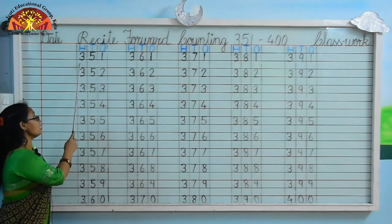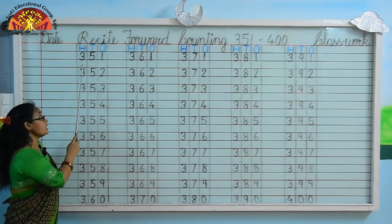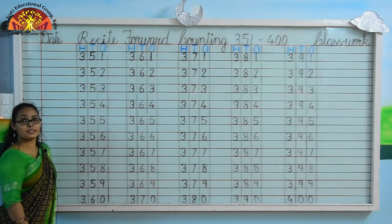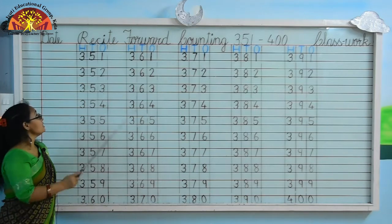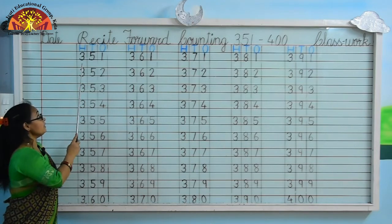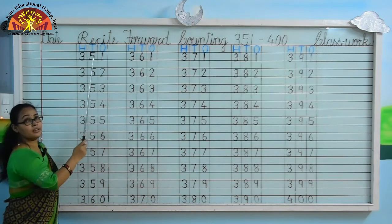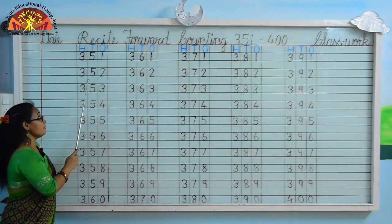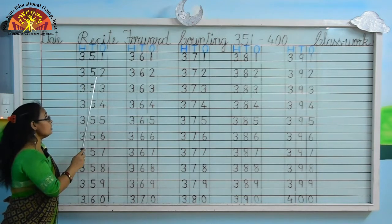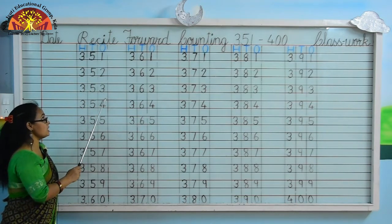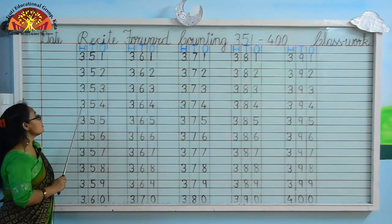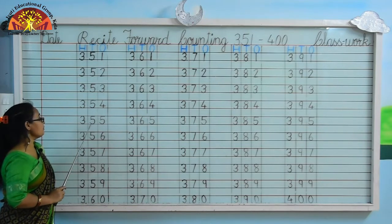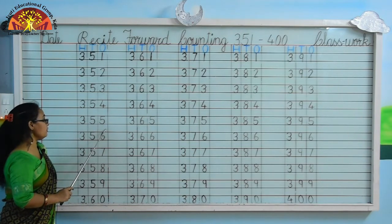Kids, what is written here? 3, 5, 1. Yes, 351. Now continue: 352, 353, 354, 355.